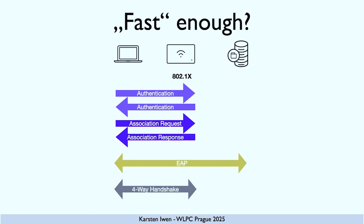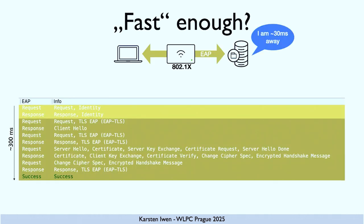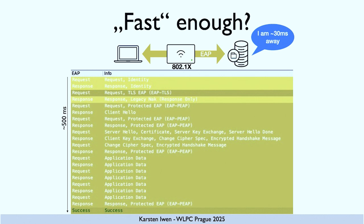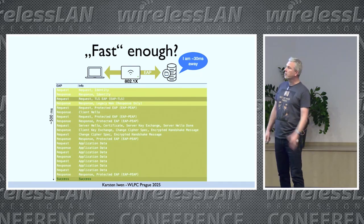This EAP exchange can take too much time if you want to do it on every roam. Here's an example with EAP-TLS, which is one of the most efficient ways to do the EAP exchange — and it was already 300 milliseconds. This client does PEAP, and we need an additional round trip for the RADIUS server to tell the client 'let's do EAP-TLS,' and the client says 'I can't do that, let us do PEAP.' Then we build our tunnel and have an inner method that is typically dependent on communication from the RADIUS server to an external server, the Active Directory. And that took 500 milliseconds in this capture.